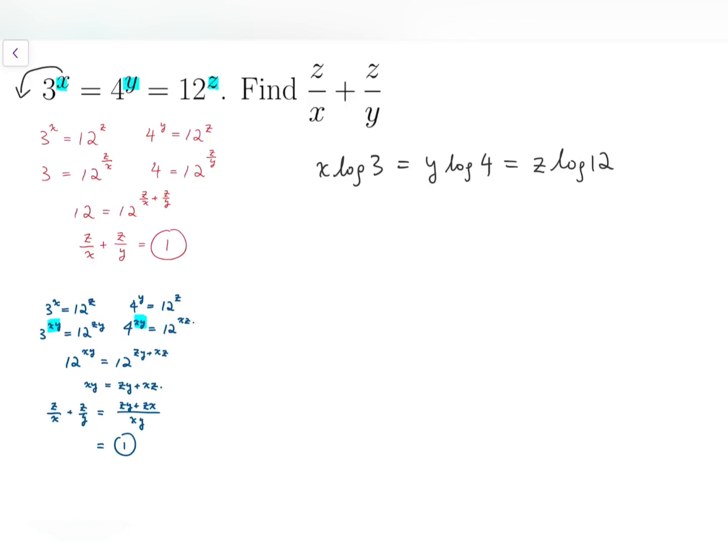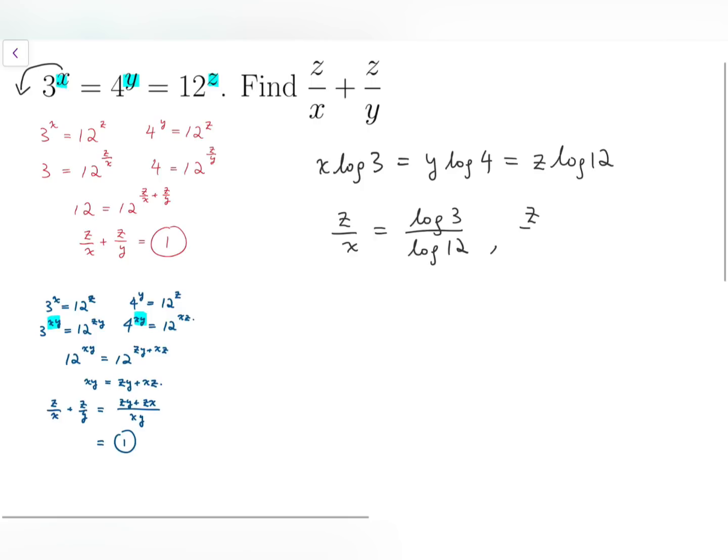Then, from this equation, we can see that z over x is equal to log 3 divided by log 12, while z over y equals log 4 over log 12. Then, by adding them up, these fractions actually have the same denominator, which is log 12.